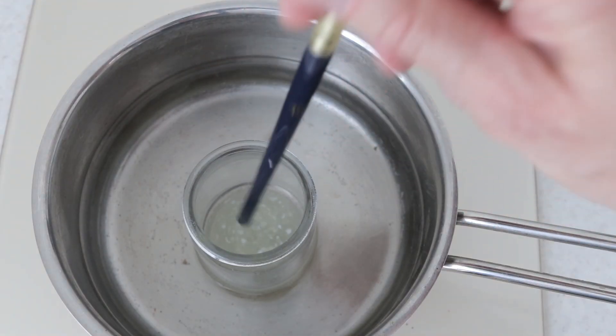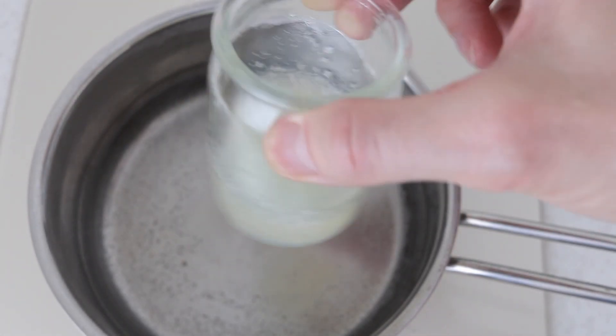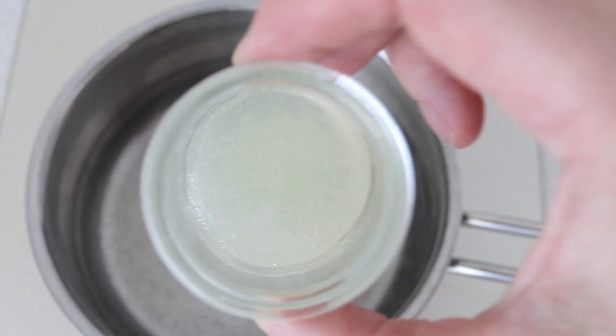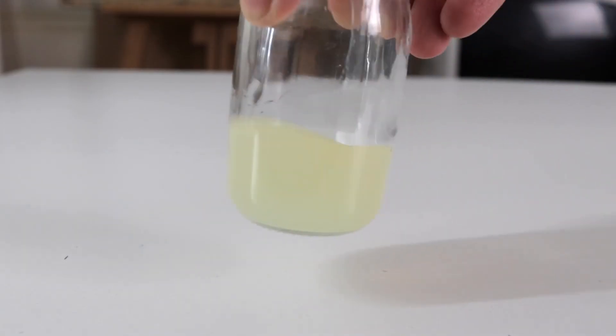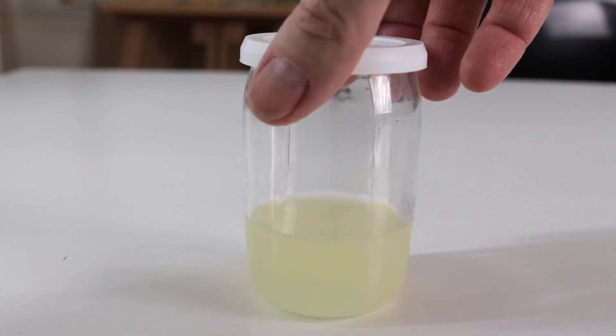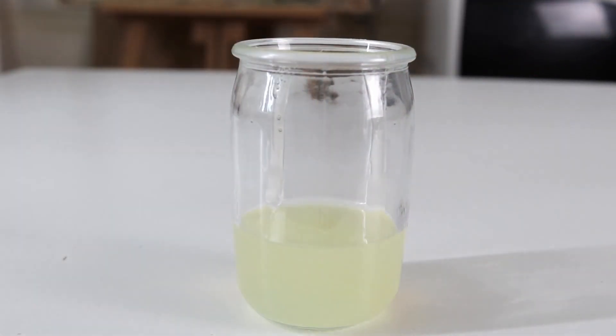We stir until the paraffin melts. This happens quite quickly. The water hasn't even had time to boil. While the resist is hot it's more liquid. But I'll leave the jar open for a few hours so that the gasoline has evaporated and the resist becomes more dense.